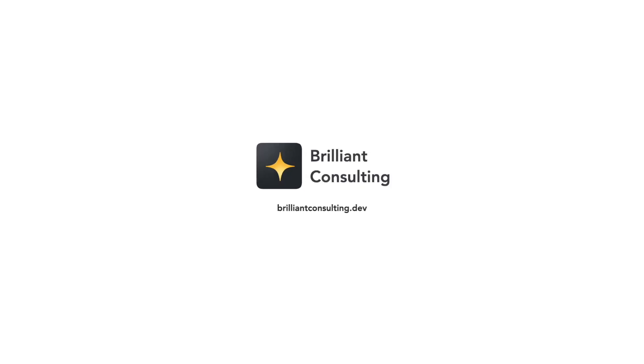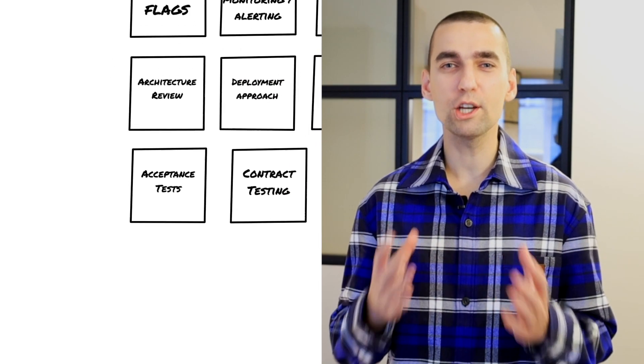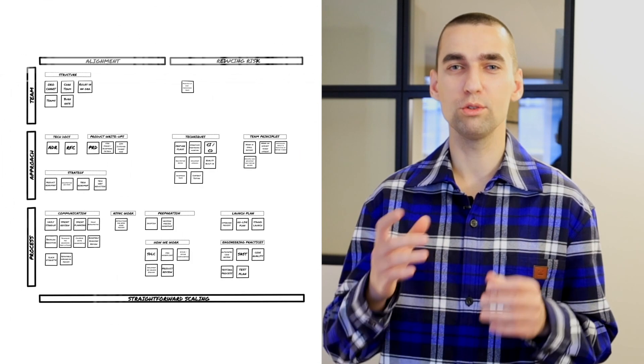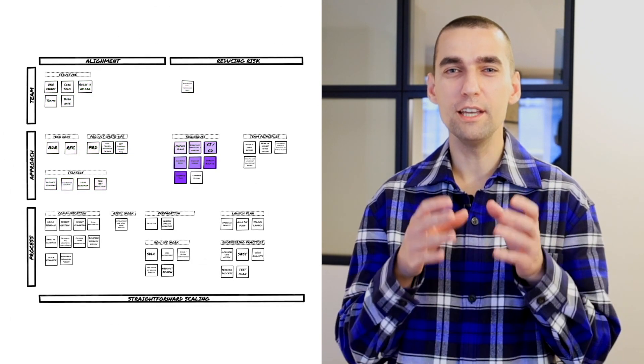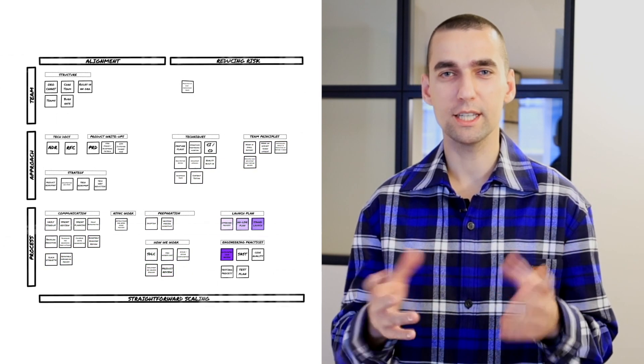Don't forget the most important part of automated acceptance tests: make sure to run it for every check-in as part of your CI. This specific action will help you reduce risk and deliver your software much more faster. In this video, I've covered just one area that is really critical to get right in order to successfully deliver software on time in a way that you can feel truly proud of — reducing risk and building up alignment along the way. If you want to learn more about other areas, subscribe to my channel.